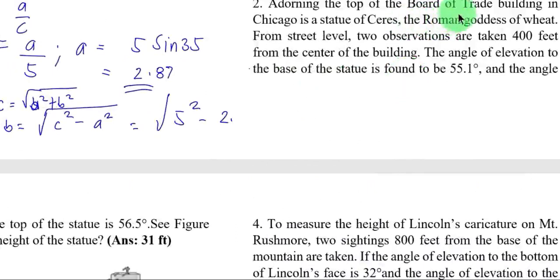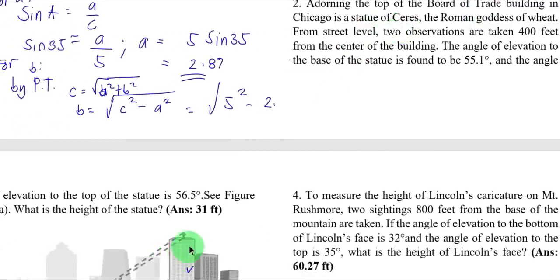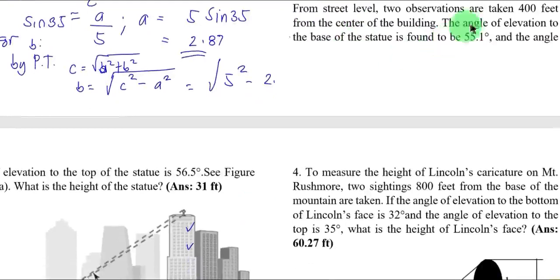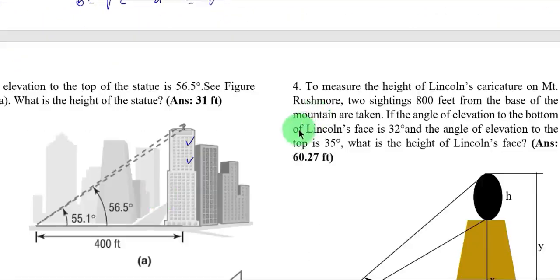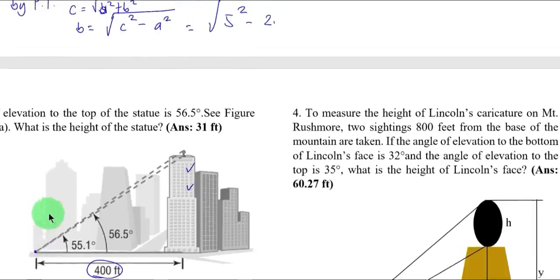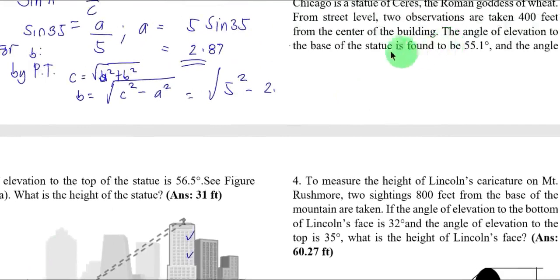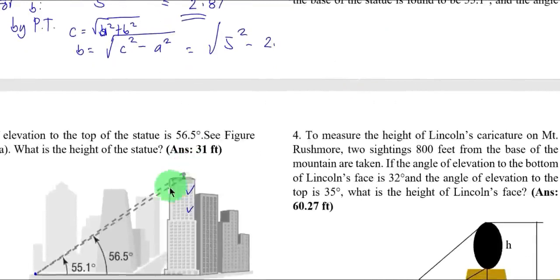Example number 2: adorning the top of the Board of Trade building in Chicago is a statue of Ceres, the Roman goddess of wheat. From street level, two observations are taken 400 feet from the center of the building. The angle of elevation to the base of the statue is found to be 55.1 degrees — this is the base of the statue at the point of observation.